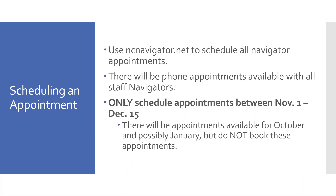There will be appointments on ncnavigator.net with our navigators for October and possibly for January, so you want to make sure you're checking the dates and only scheduling individuals for appointments between November 1st and December 15th. Keep in mind that our navigators meet with people year round — 52 weeks out of the year — so those October and January appointments need to stay up. But as far as you volunteers are concerned, whenever you're making these callbacks, since these are just for open enrollment appointments, you want to make sure you are only scheduling them between November 1st and December 15th.